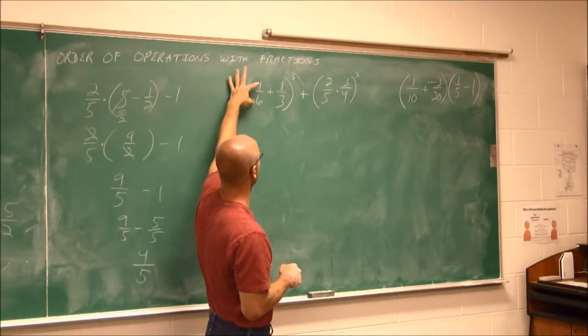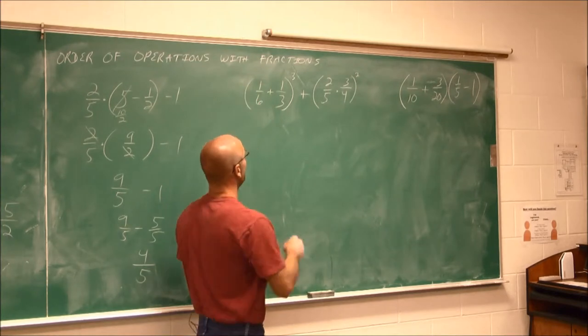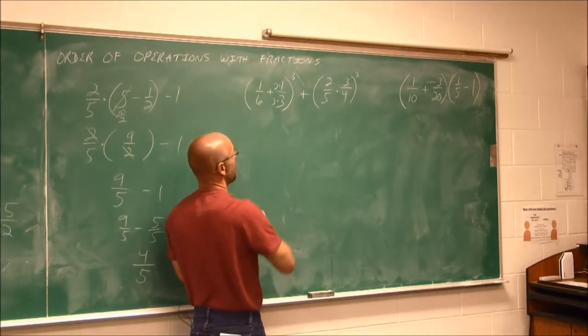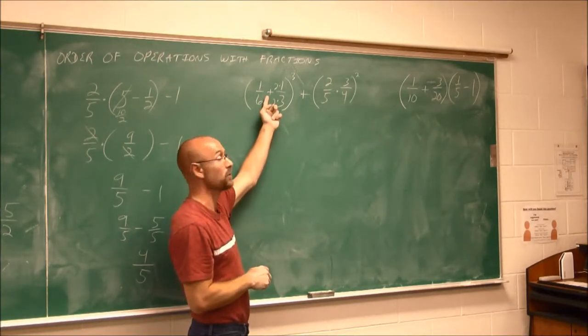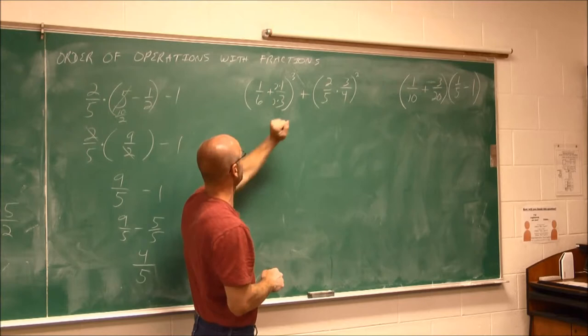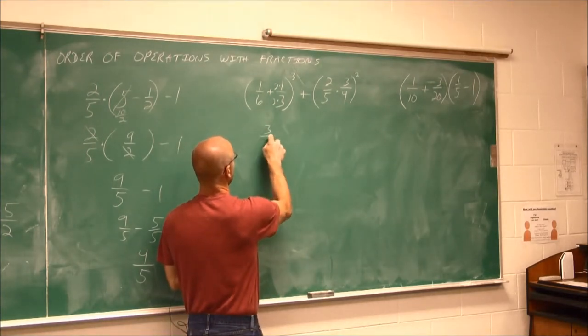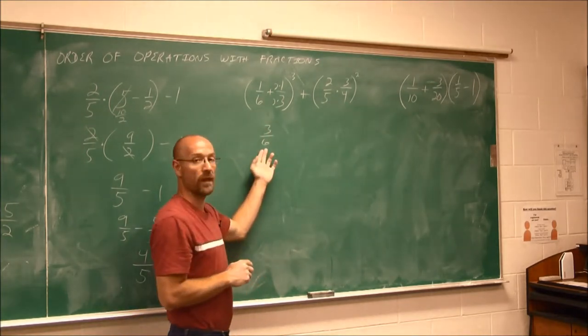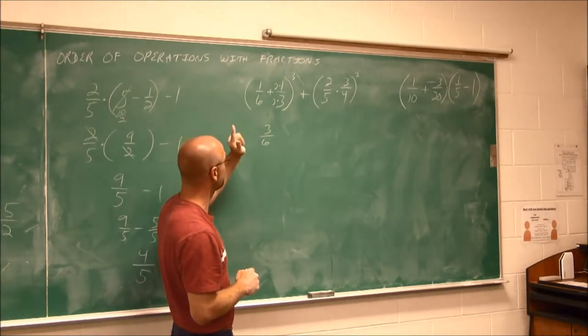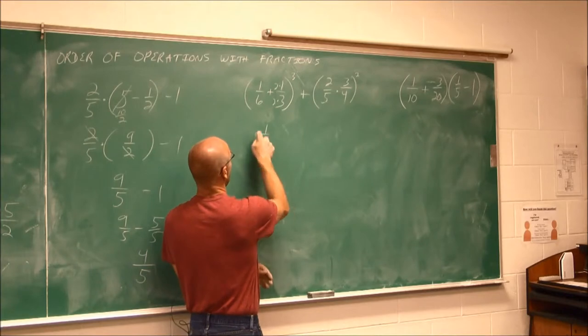So within this grouping symbol, 1 sixth plus 1 third, I have to multiply this by 2 over 2 to get that common denominator, because it's addition. So this becomes 2 sixths. 2 sixths and 1 sixth is 3 sixths. And what do we notice about that? Maybe we notice that it reduces to 1 half. So I'm going to reduce it right now. This is 1 half.